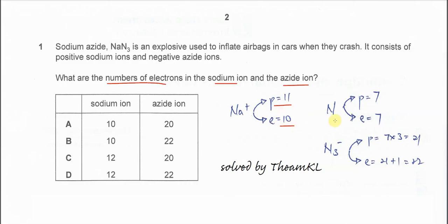For nitrogen, we know that the proton number is 7 and the electron number is 7. Now we have N3 negative. So there are 3 nitrogen atoms here, so the proton number times 3 is 21.